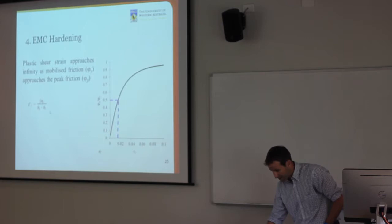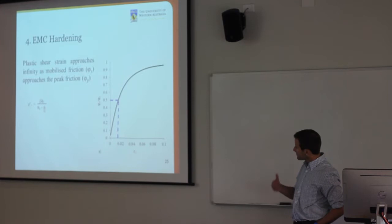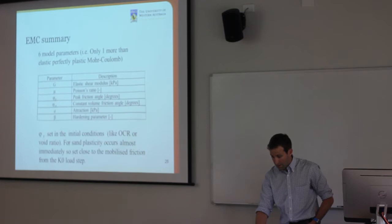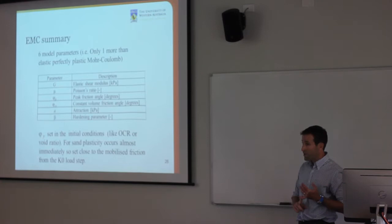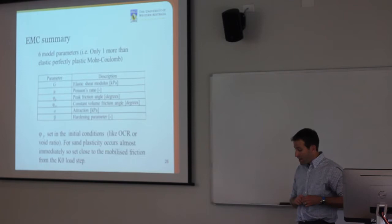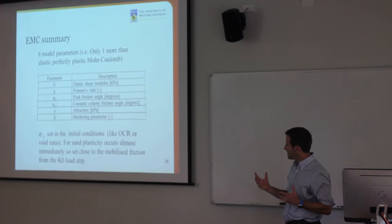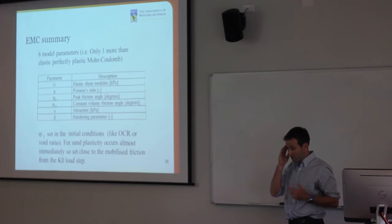The hardening rule introduces a relationship between plastic shear strain and mobilised friction φ_y through a fairly simple equation. As φ_y approaches φ_p, the denominator approaches zero and shear strain goes to infinity. The parameter β represents the plastic shear strain when you've mobilised 50% of your peak — when φ_y/φ_p equals half, that's your β value. The model has six parameters — only one more than the standard More-Coulomb plastic model. In addition, you need to set φ_y in the initial conditions, just like you establish initial stresses. For sands, plasticity occurs almost immediately, so φ_y is set close to the initial mobilised friction angle.